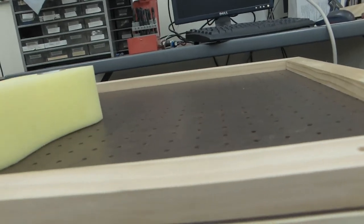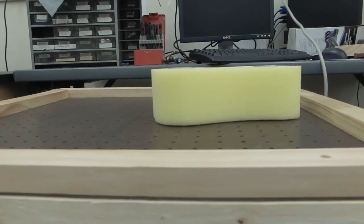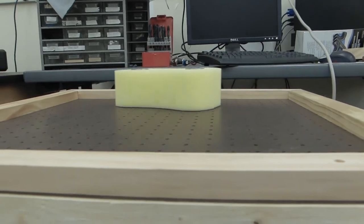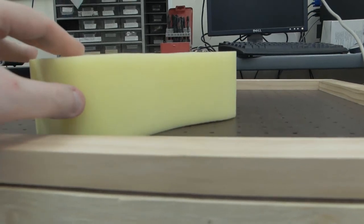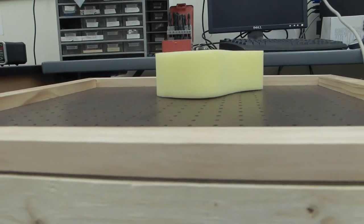The leaf blower is very noisy, so you may want to get yourself some ear protection when you use the table. Here we see a foam rubber sponge moving frictionlessly along the surface.